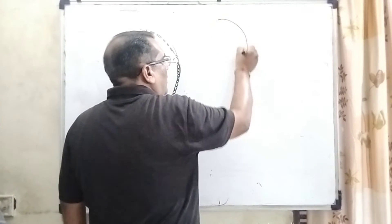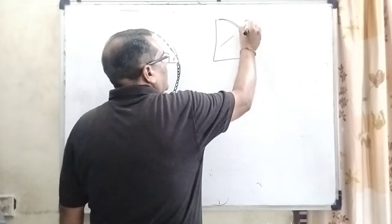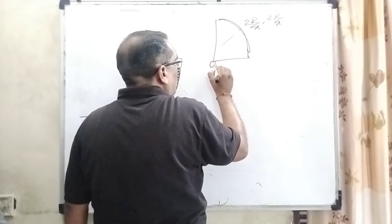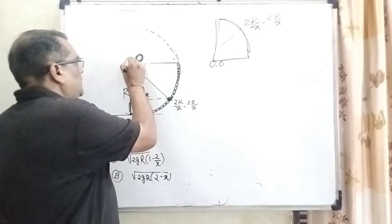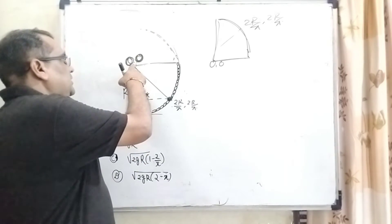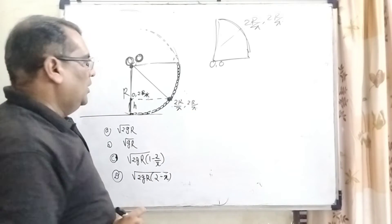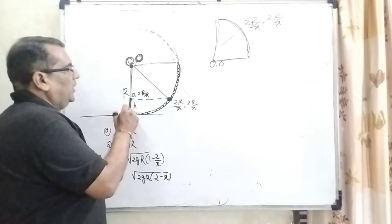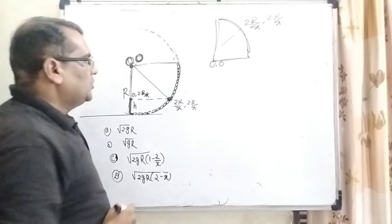As we know, for the quarter part of this ring, the center of mass is 2R by pi, 2R by pi, when we consider the origin at this point. But here we have considered the origin at the center of this imaginary circle. So this is the center, and this is the coordinate 2R by pi, 2R by pi.